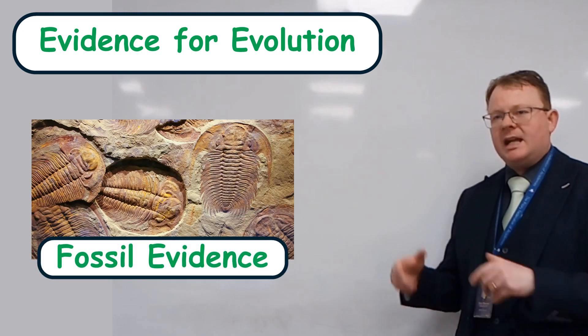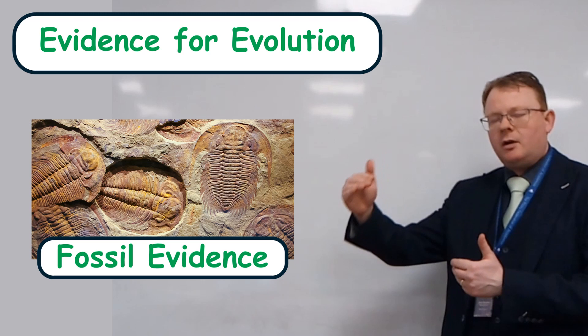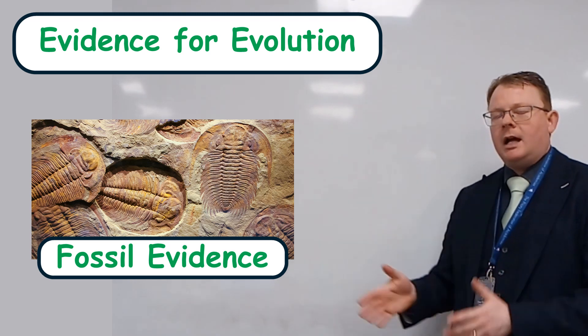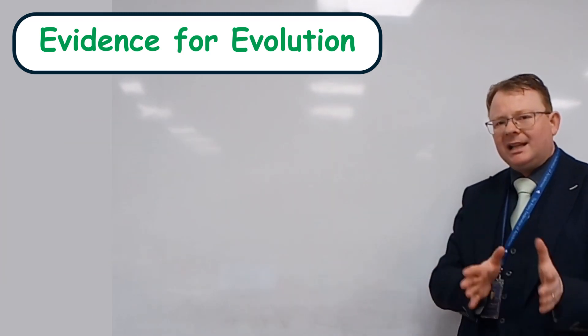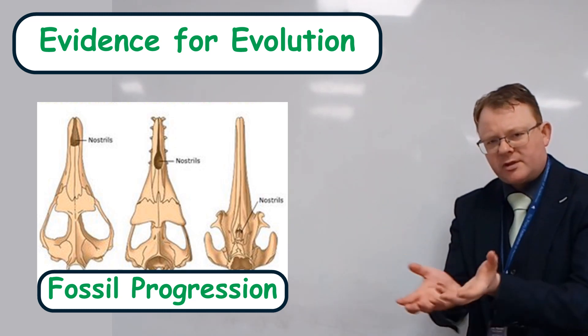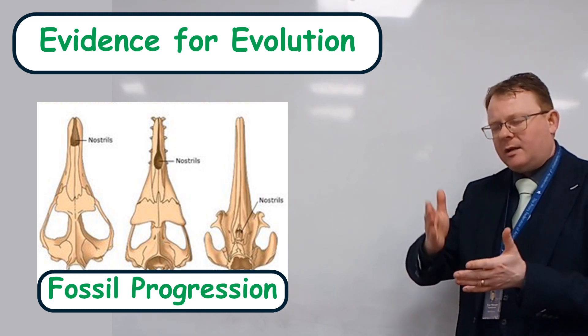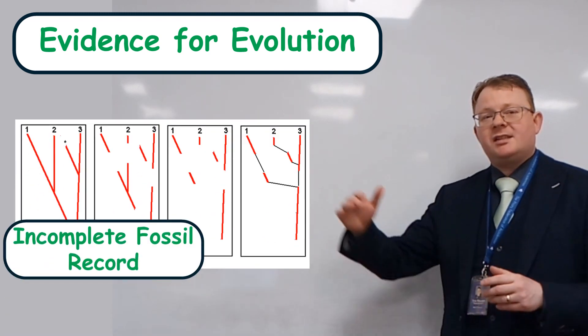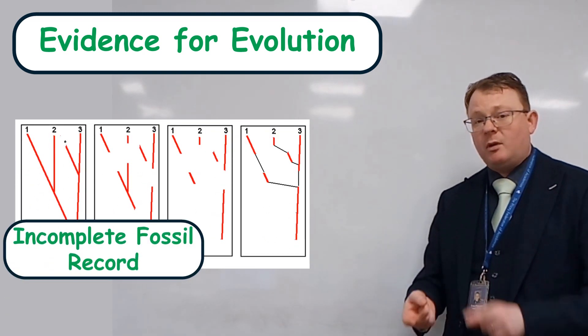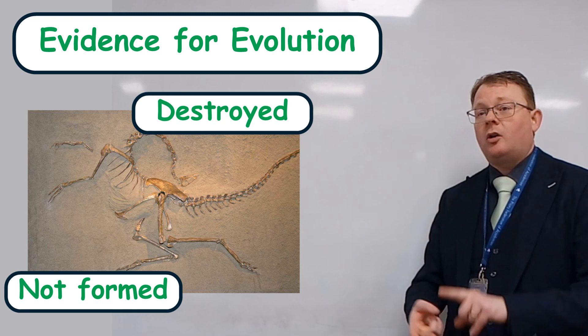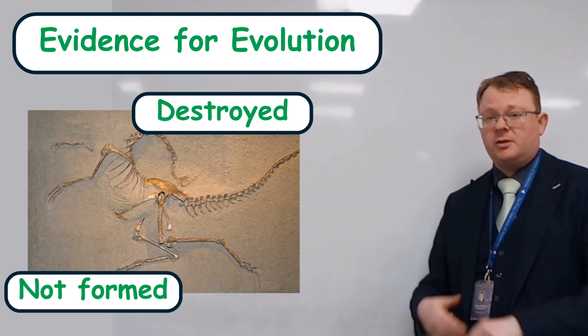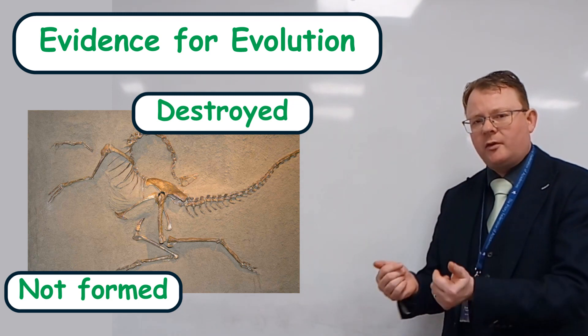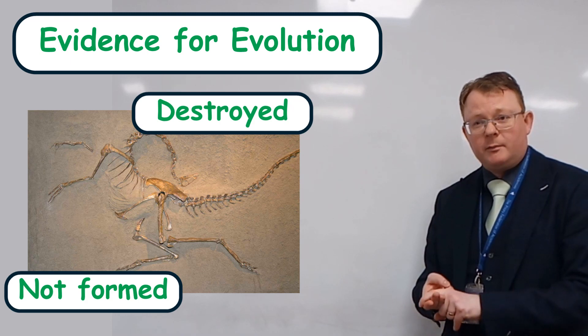First piece of evidence is fossil evidence. So we've got a fossil record, and in that fossil record you can clearly see how one fossilised creature is turning progressively into another. Big problem with the fossil record is that it's not complete due to the fact that we might not have found all of the fossils, or the fossils might not have formed because you need certain conditions for them to form, or we might not have found them yet.